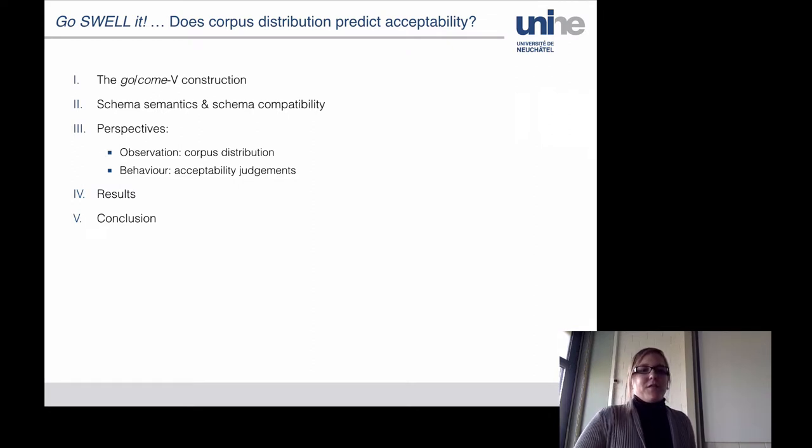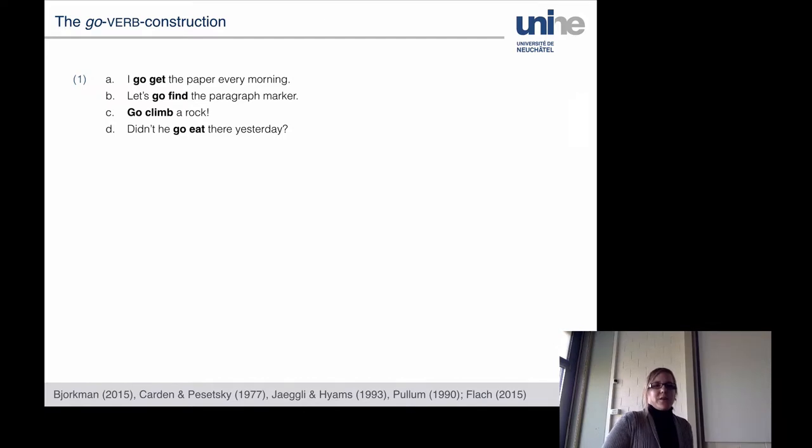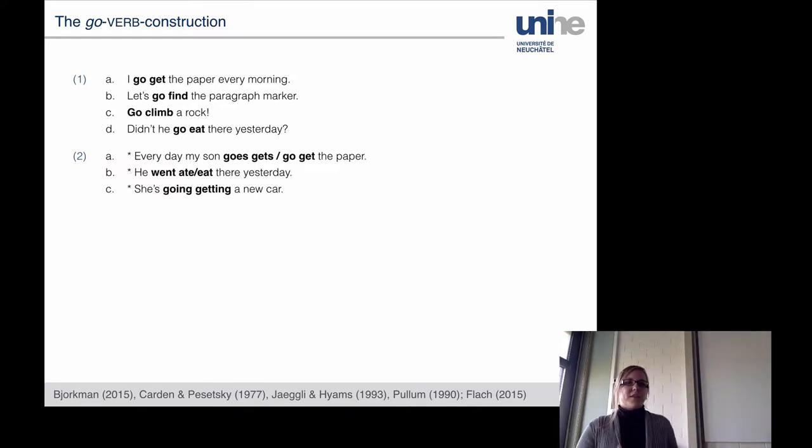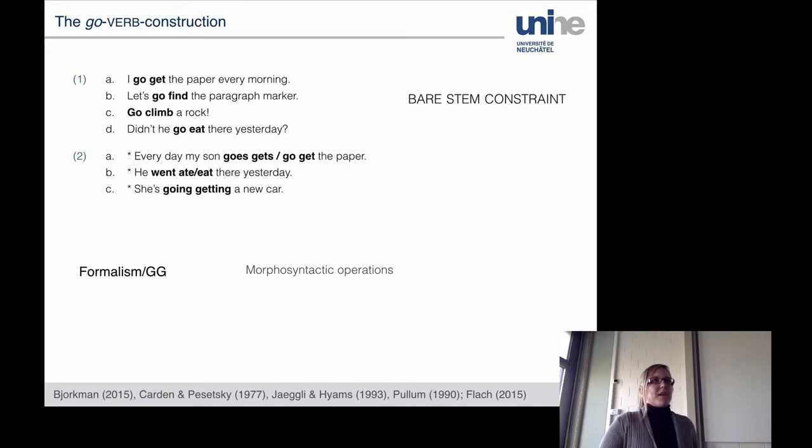I did it in terms of schema semantics, sort of constructional semantics from a cognitive linguistic perspective, and I focused on the corpus data from various perspectives. And now I've actually done some acceptability judgments, very simple tasks, so I'll discuss them and compare corpus distribution with acceptability judgments. What's the GoVerb construction? I go get the paper every morning, let's go find the paragraph marker where you have the motion verbs Go or Come followed by an infinitive. And the interesting thing about this construction in English is that it does not allow inflection. So any inflectional contexts are ruled out. This has been referred to as the bare stem constraint, and because it seems purely formal it has attracted most attention in the formalist literature where it's seen as the output of morphosyntactic operations.